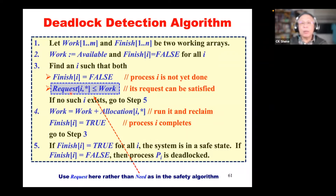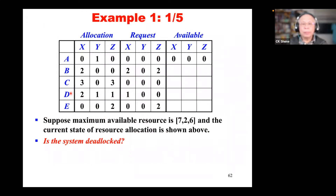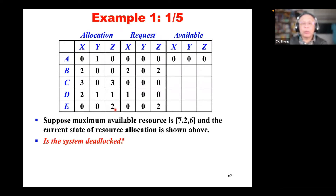Please do not hesitate to pause if you feel it is necessary. Now, here is the deadlock detection algorithm. First, we copy the current available array to a working array and set every process's finished entry to false — the same as the safety algorithm.